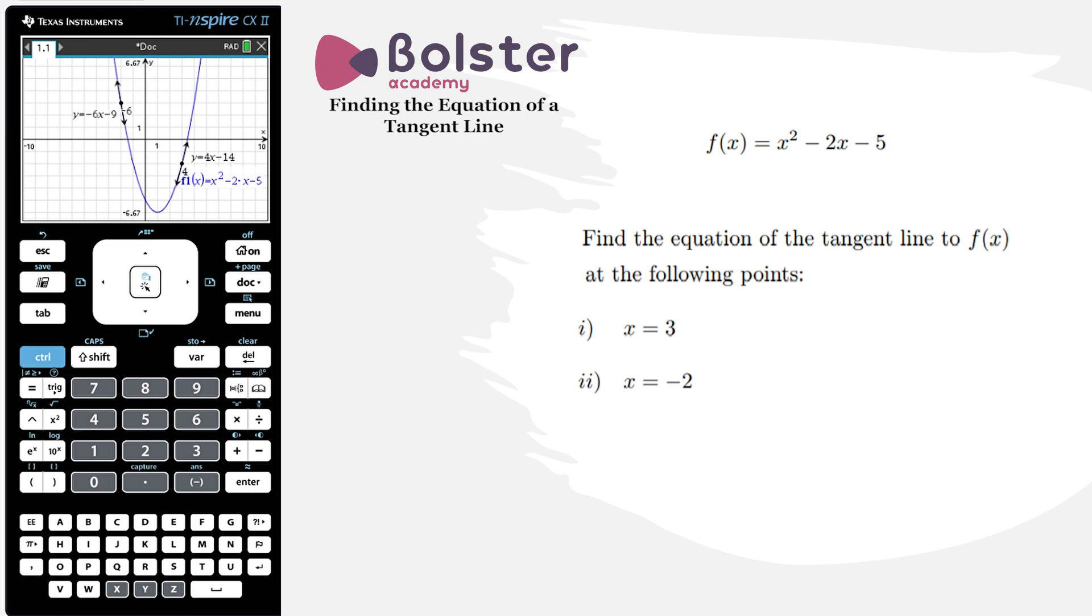Another thing to note is we can clearly see that both of the equations of the tangent lines have the correct gradient. y equals mx plus c. The m in the first case is 4 and the second case it's minus 6 and that's exactly what our equations are giving us so we know we've done things correctly.